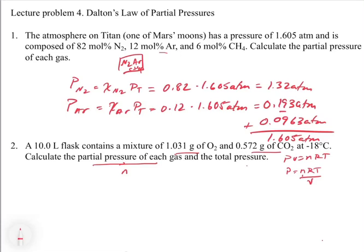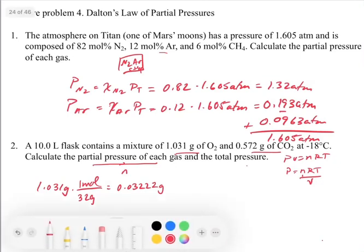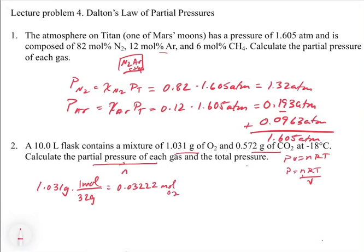First, we need to get the number of moles. For O2: 1.031 grams divided by the molecular weight of oxygen, 32 grams per mole, gives 0.0322 moles of O2. For CO2: 0.572 grams divided by 44 grams per mole equals 0.013 moles of CO2.